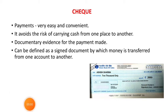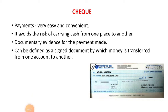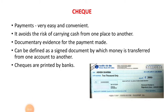It is an instrument in writing containing an unconditional order signed by the maker, directing a banker to pay on demand a certain sum of money only to a certain person. Checks are printed by the banks on a special type of paper and these are serially numbered. Next, we will do the characteristics of a check.